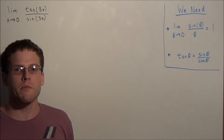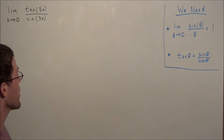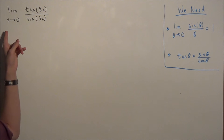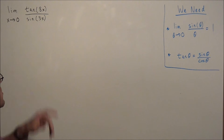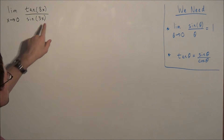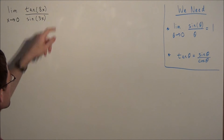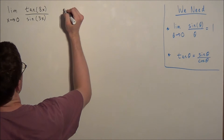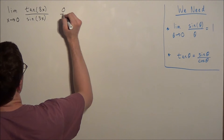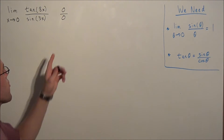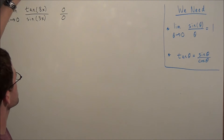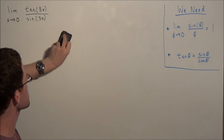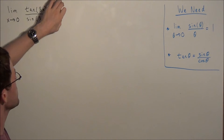With any limit problem, it's always a good idea to try to evaluate it by substitution. But the problem with substituting x equals 0 is that we wind up with the fraction 0 divided by 0, which is an indeterminate form. This tells us we need to use other techniques to find the limit.